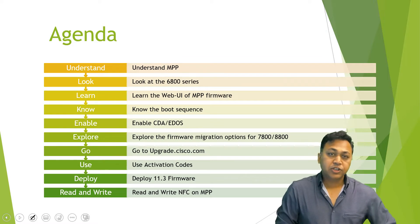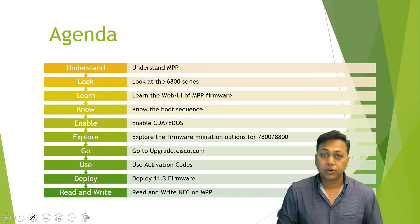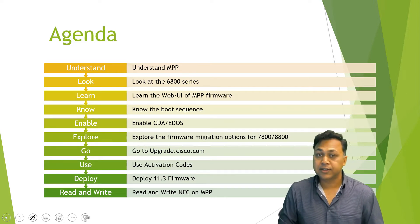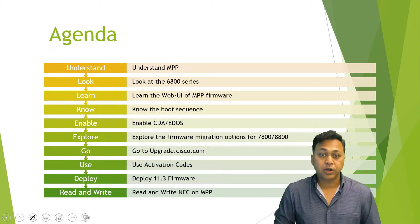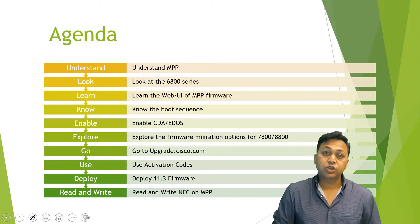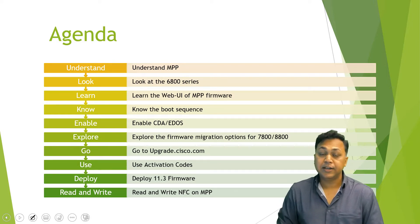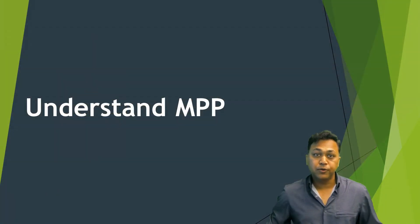The agenda for this video is to understand the multi-platform protocol, or MPP. We're going to look at the 6800 series and 7800 series phones, the GUI interface for multi-platform firmware upgrade, the boot sequence of a WebEx cloud phone, how to enable CDA and EDS, firmware migration going from 7800 series to WebEx cloud, how to utilize upgrade.cisco.com, and how to use an activation code to register a phone.